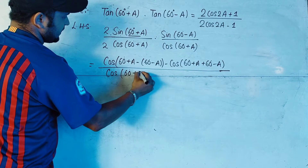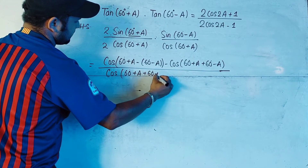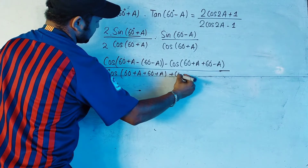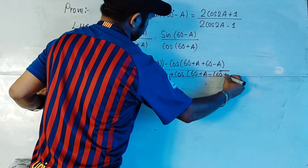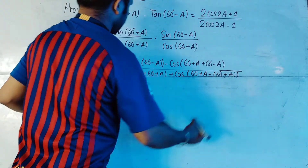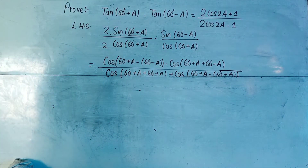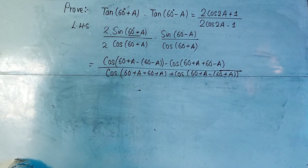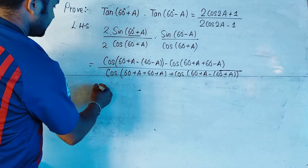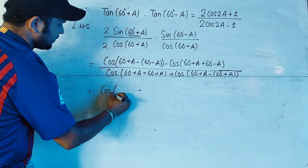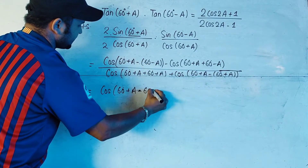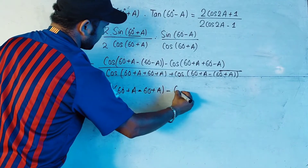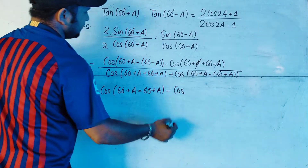Now we'll be using the formula of 2cosA cosB in the denominator. The formula is: 2cosA cosB equals cos(A+B) plus cos(A-B). When there is a minus sign, I have used a bracket. Now we'll be calculating the terms inside the bracket.